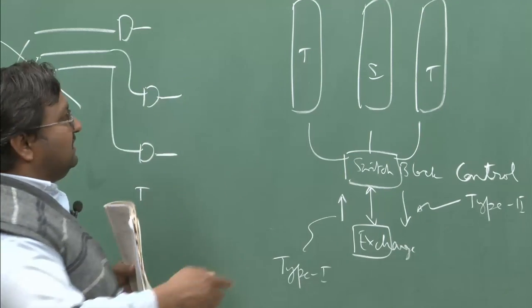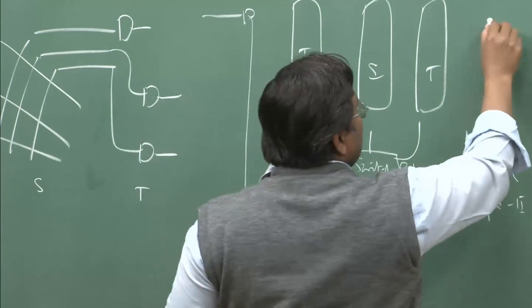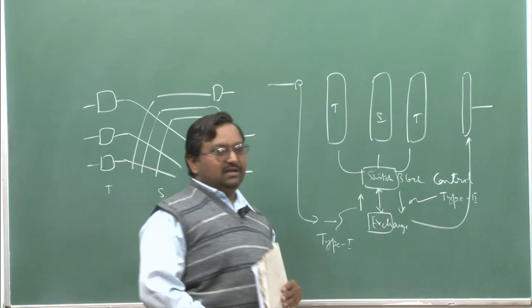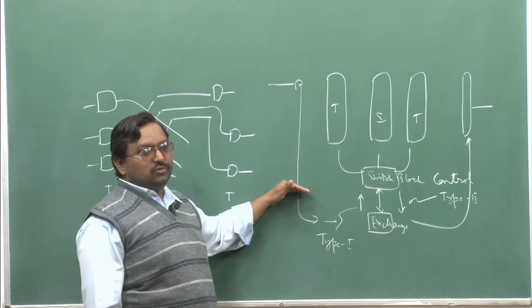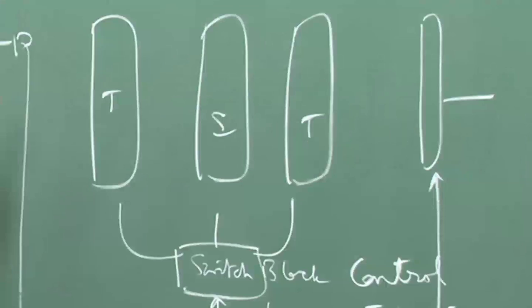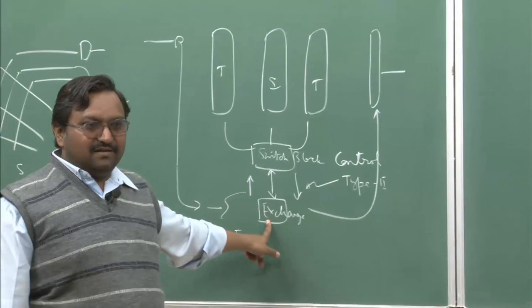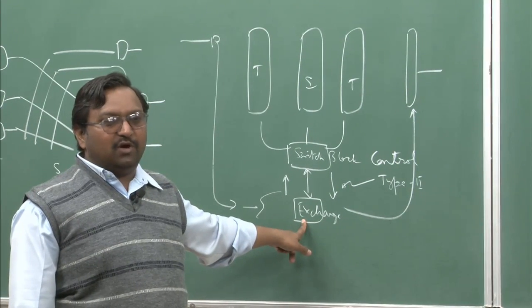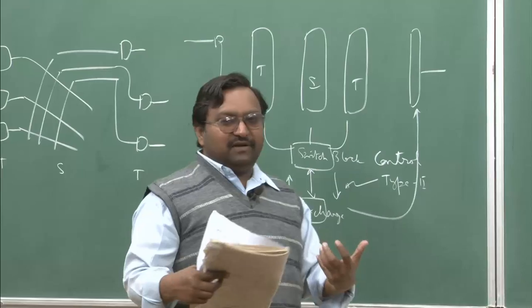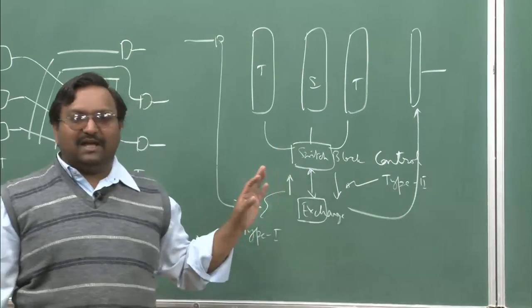This is highly vendor specific, because these components need not be built by separate companies. A telecom operator will buy the whole switch itself. As far as the standard is concerned, there will be interface cards which will tap all the information and send it to the exchange control. Similarly, there will be interface cards on the other side pumping information back over a signaling channel. Standardization comes into picture whenever two different vendors' equipment have to inter-operate.